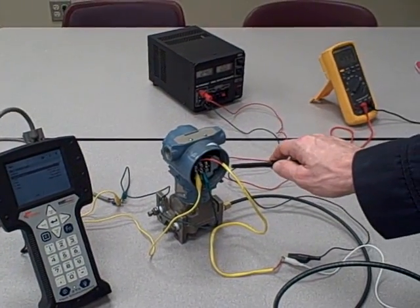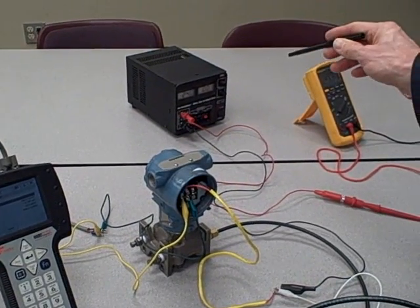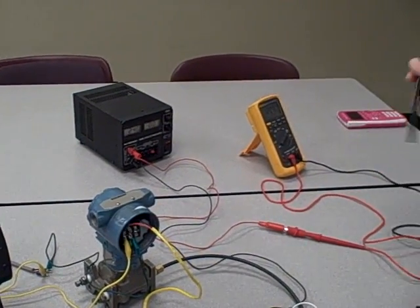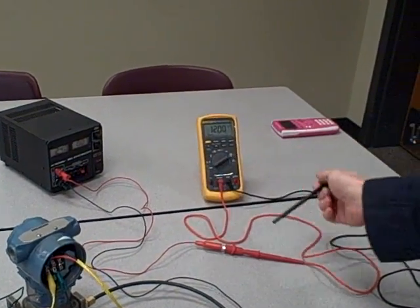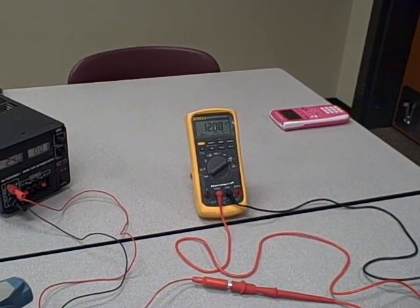Here we have a Rosemount Model 1151 Differential Pressure Transmitter. It is being powered up by a 24-volt variable supply. We are measuring the loop current using a Fluke Model 87-5 multimeter, reading about 12 milliamps right now.